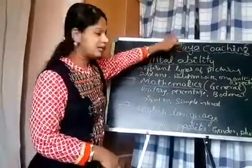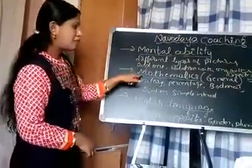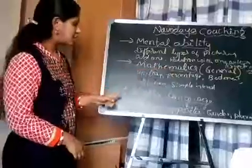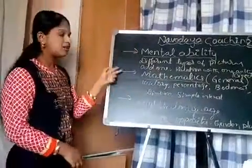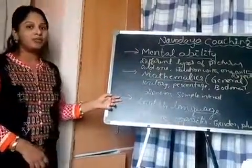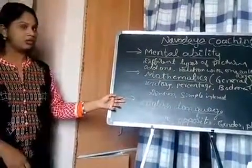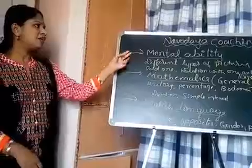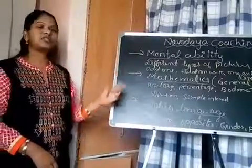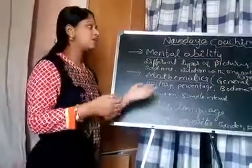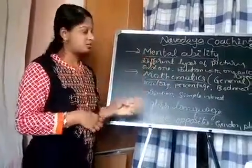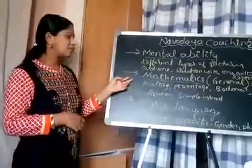These are the three main important areas in the Navodaya. Mental ability covers relationships and directions. In mathematics, we are discussing about general mathematics.